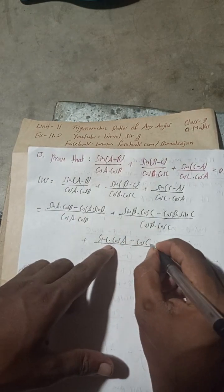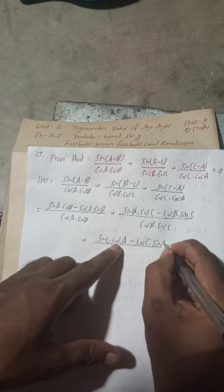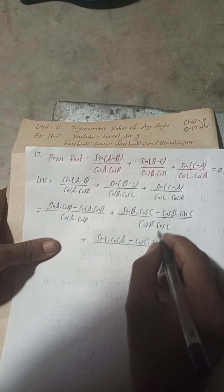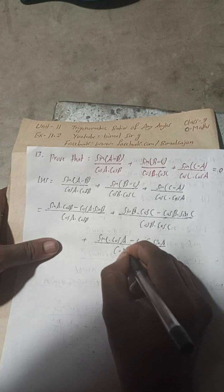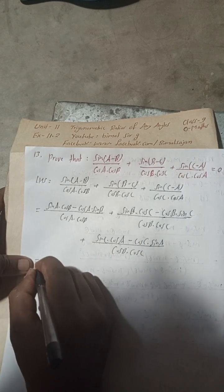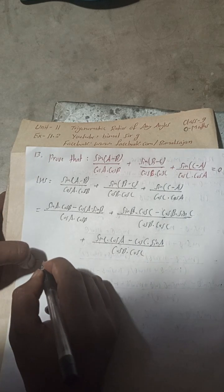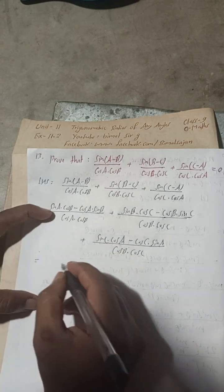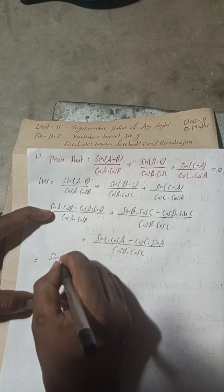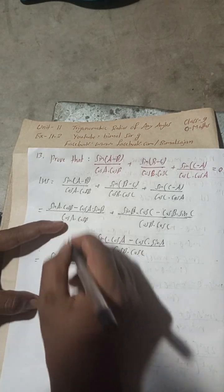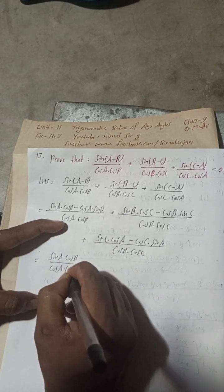The third term becomes: (sin C · cos A − cos C · sin A) / (cos C · cos A). Now we separate each fraction. In the first term, cos B cancels: sin A / cos A − sin B / cos B. In the second term, cos C cancels: sin B / cos B − sin C / cos C.